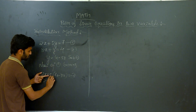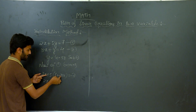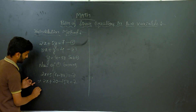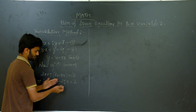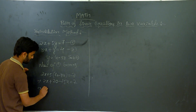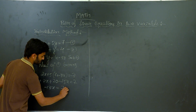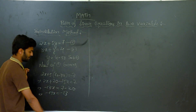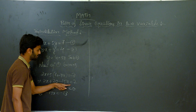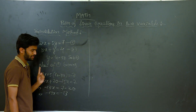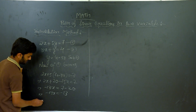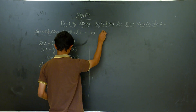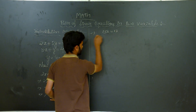Now solving this: 2X plus 5 into 4 is 20, and 5 into 3X is 15X, so we get 2X plus 20 minus 15X which is equal to 7. Then 2X minus 15X gives minus 13X, which is equal to 7 minus 20, so minus 13X equals minus 13. We have now converted this into a linear equation.